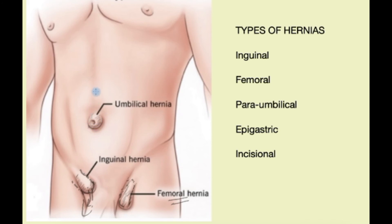There is a point in the midline between the breastbone and the belly button where epigastric hernias can form, and they have slightly different symptoms. They can cause a burning pain and are often confused with a peptic ulcer.